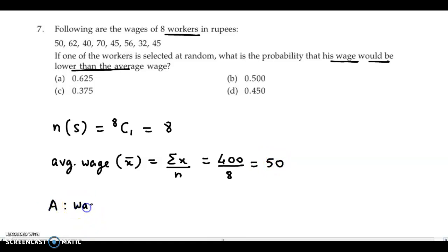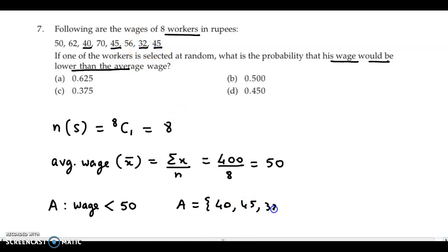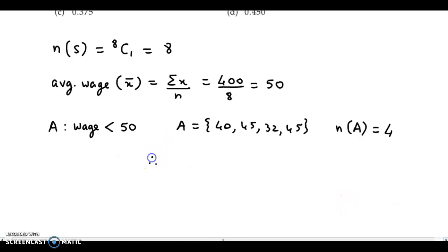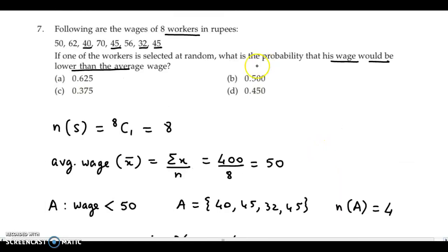We define event A as the wage being lower than the average wage of 50. The favorable outcomes from the data are 40, 45, 32, and 45 — all less than 50. So n of A is 4. Therefore probability of event A is 4 by 8, which is half, or 0.5 in decimal form. The correct answer is option B, 0.5.